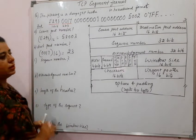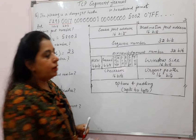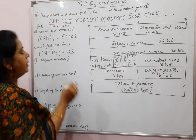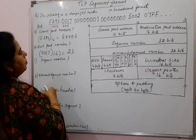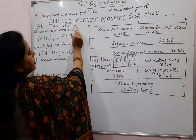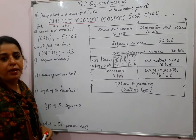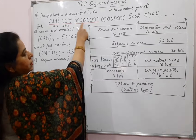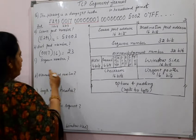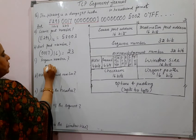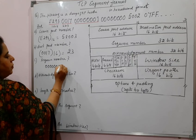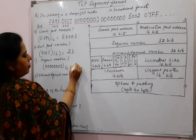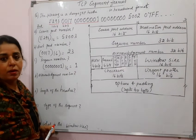The third part asks what is the sequence number. The sequence number is 32 bits, meaning the next 8 hex numbers indicate the sequence number. The value is 00000001 and the decimal value is 1. The sequence number is 1 in this case.